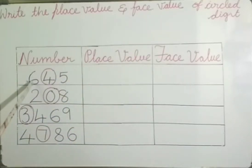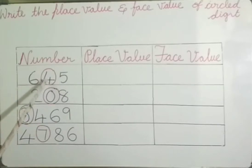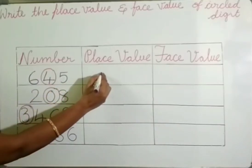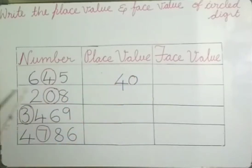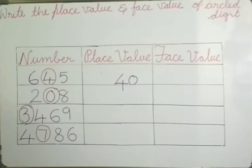In the number 645, the circled digit is 4. 4 is at the 10's place, so the place value of 4 is 40. When we read 645, we read 4 as 40. So we write 40 as the place value. The face value means the digit itself, and the digit is 4, so the face value of 4 is 4.